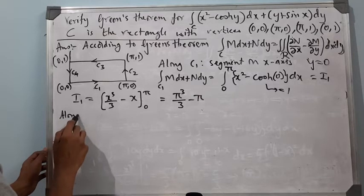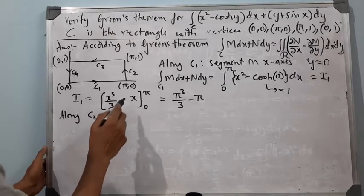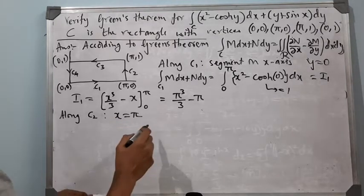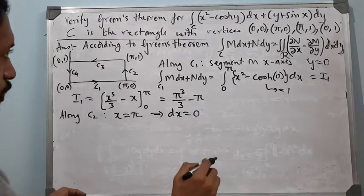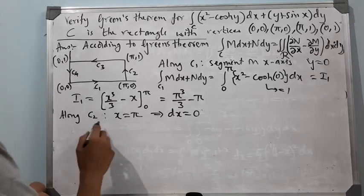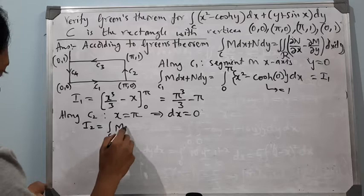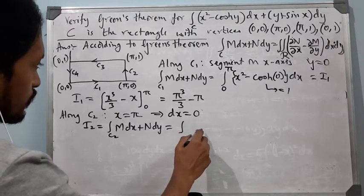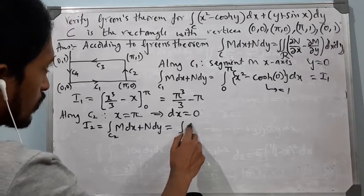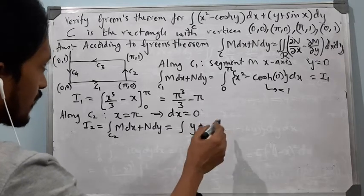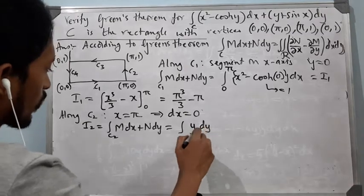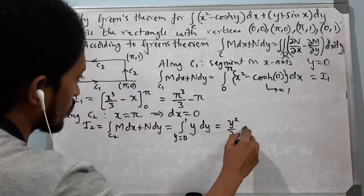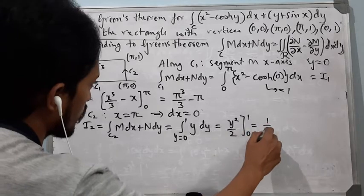Similarly, along C2 we have x = π, a constant, so dx = 0. I2 equals the integral along C2 of M dx + N dy, which becomes the integral of (y + sin(π)) dy. Since sin(π) = 0, this is just the integral of y dy from y = 0 to 1, giving y²/2 from 0 to 1, so I2 = 1/2.